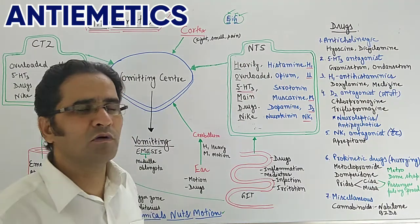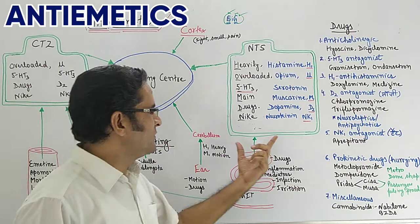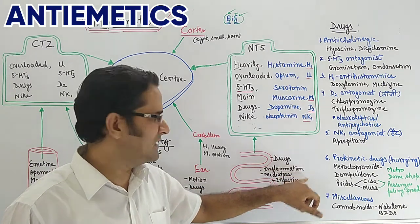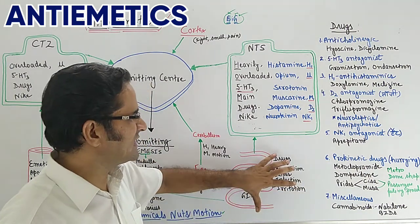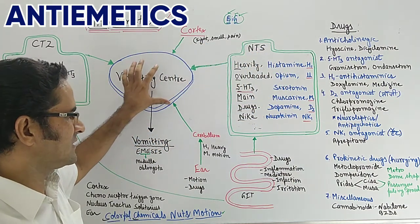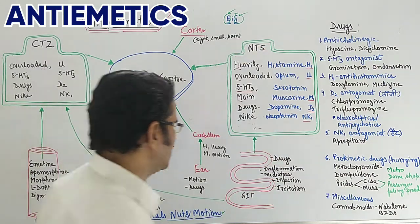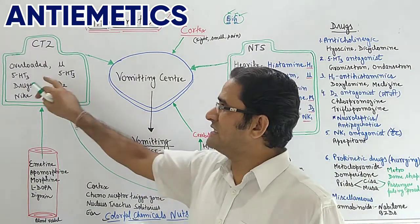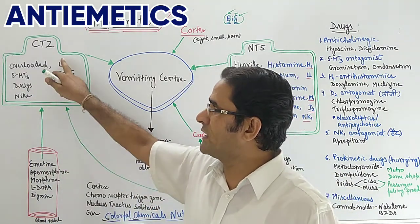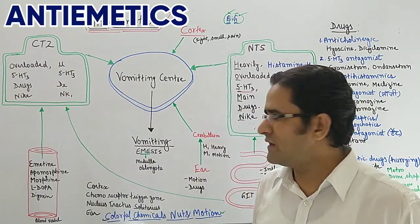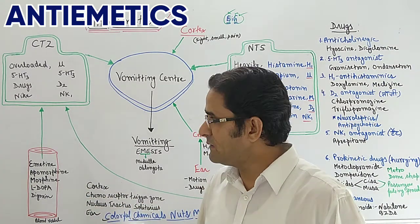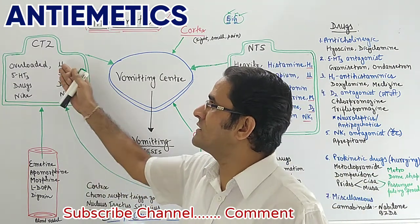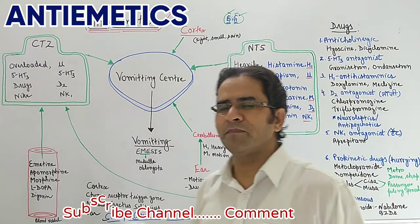The NTS receptors are stimulated by mediators or drugs present in the GIT — such as when inflammation, infection, or irritation occurs, mediators are released which ultimately reach the NTS and cause vomiting. From the GIT, information reaches not only the NTS but also the CTZ, meaning the CTZ is also stimulated by GIT mediators. Apart from this, the CTZ is also directly stimulated by different drugs that reach the brain — drugs such as Emetine, Apomorphine, Morphine, Levodopa, and Nicotine. This means the main side effect of all these drugs will be emesis or vomiting, because they directly stimulate the CTZ.